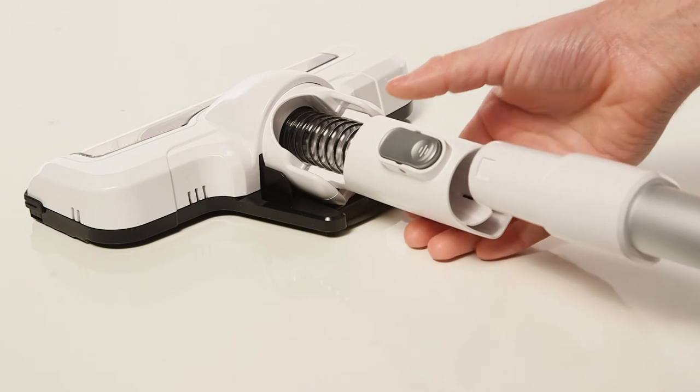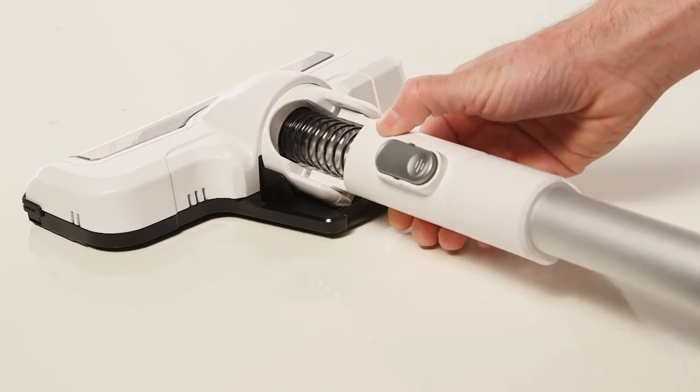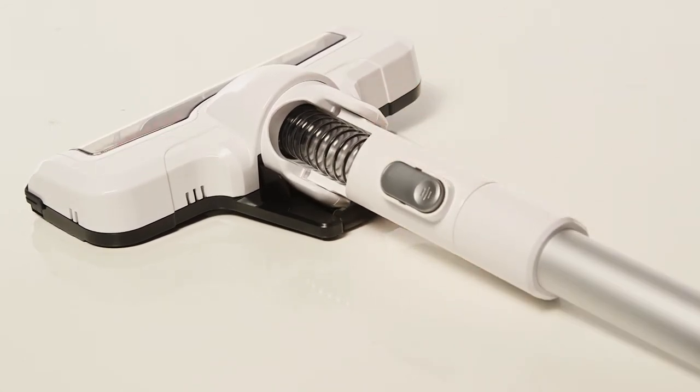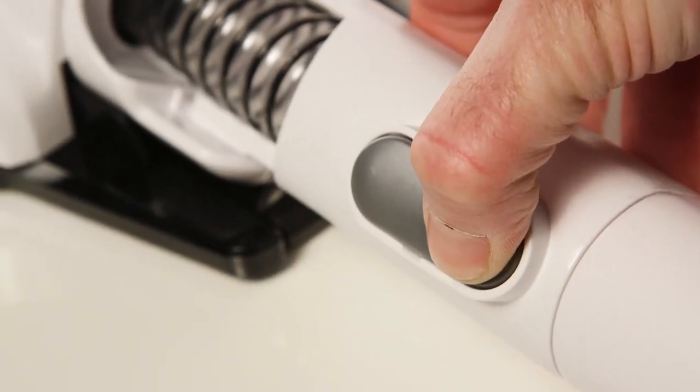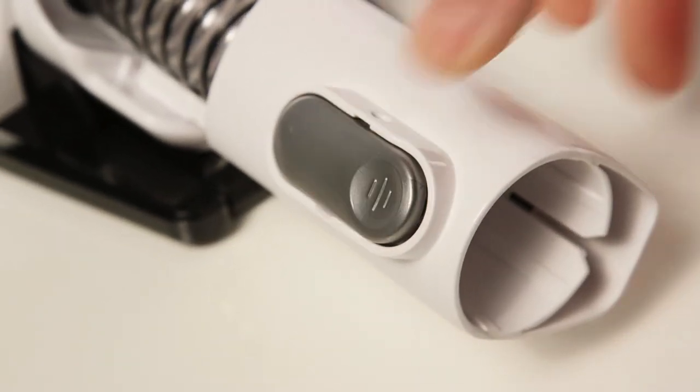To attach the floor head slide the brush onto the extension tube until it clicks into place. Remove the floor head by holding the button and pulling the brush away from the extension tube.